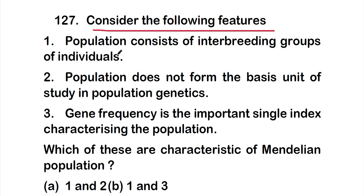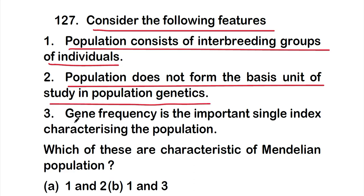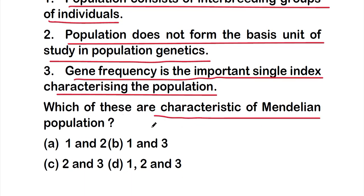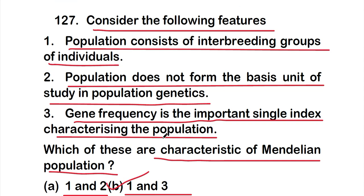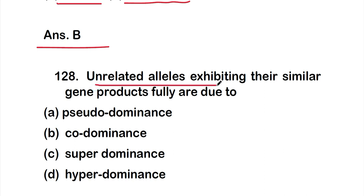Question 127: Consider the following features: (1) a population consists of interbreeding groups of individuals; (2) population does not form the basic unit of study in population genetics; (3) gene frequency is the important single index characterizing the population. Which are characteristics of a Mendelian population? The right answer is option B — statements one and three are correct.